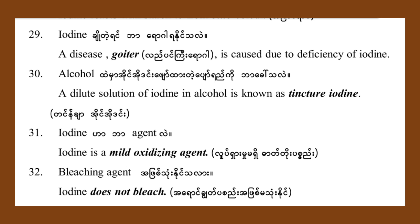Goiter disease is caused by the deficiency of iodine. A dilute solution of iodine in alcohol is known as tincture of iodine.